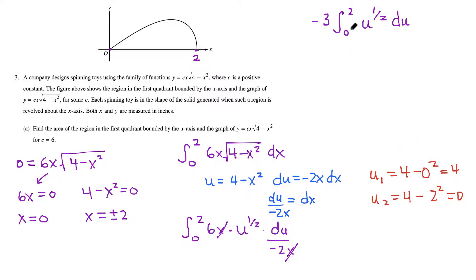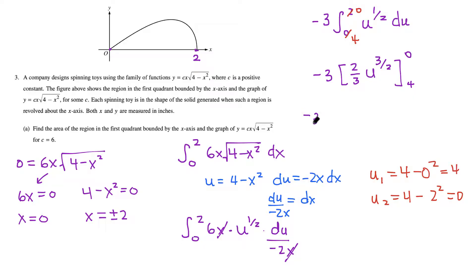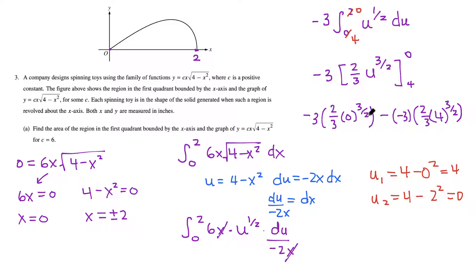With the new bounds, the integral in terms of u is set up. Integrating −3u^(1/2) gives −3 times u^(3/2) divided by 3/2, which simplifies to multiplying by 2/3, evaluated from 4 to 0. Plugging in 0 gives zero for the upper term. For the lower term: −3 times 2/3 times 4^(3/2). The threes cancel, and 4^(3/2) = 8, giving −(−2 × 8) = 16.